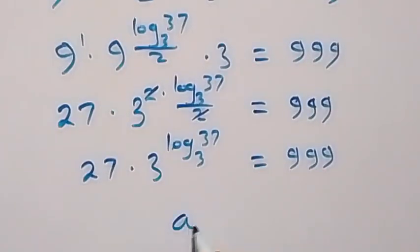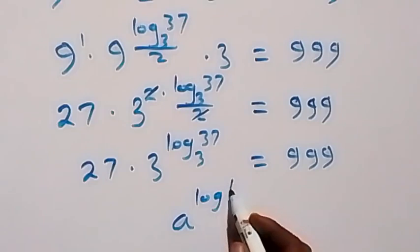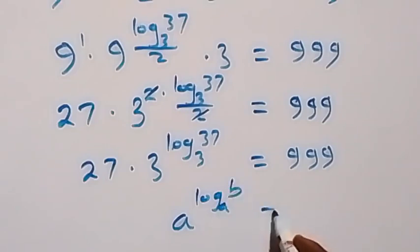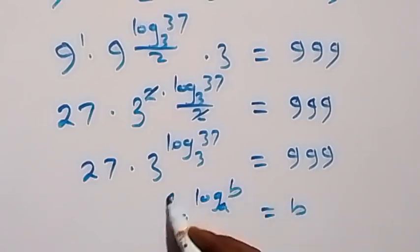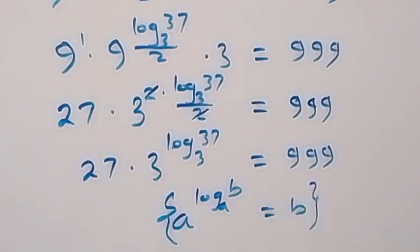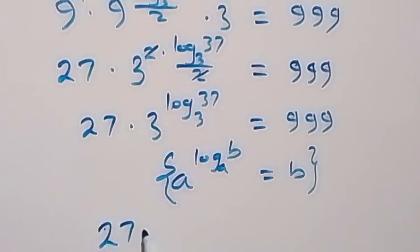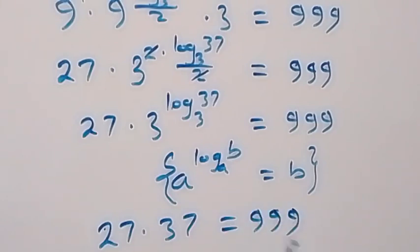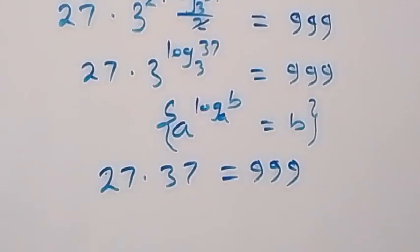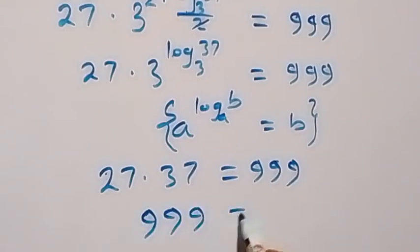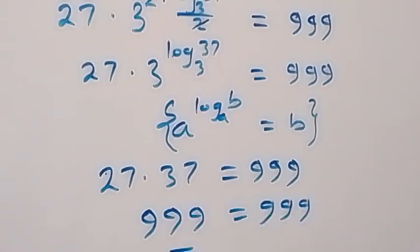Applying the identity a raised to power log_a(b) equals b, we get 27 times 37 equals 9.99. Multiplying 27 times 37 gives 999, which equals 9.99. Left-hand side equals right-hand side.